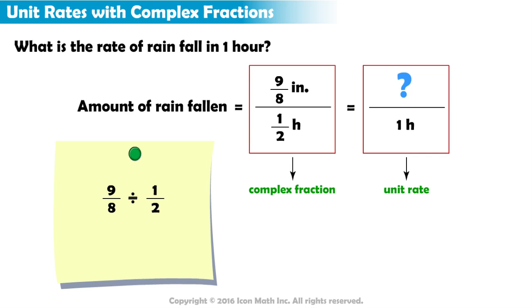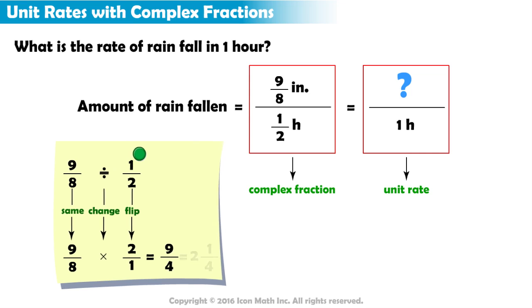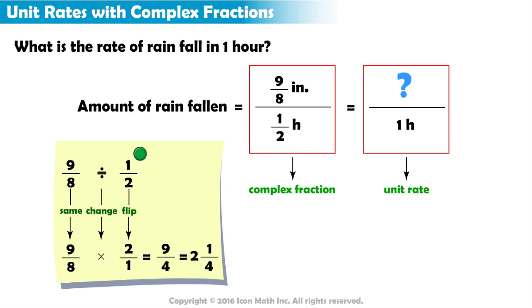When dividing with fractions, we change the division expression to a multiplication one using same, change, flip. 9-eighths multiplied by 2 over 1 equals 18-eighths or 9-fourths which reduces to 2 and 1-fourth.